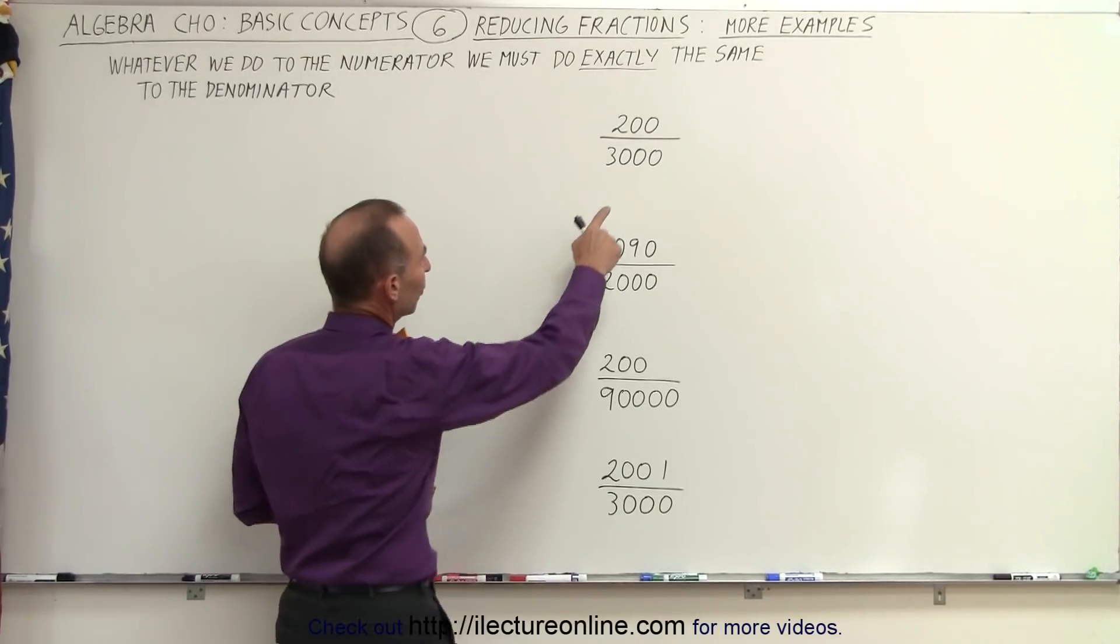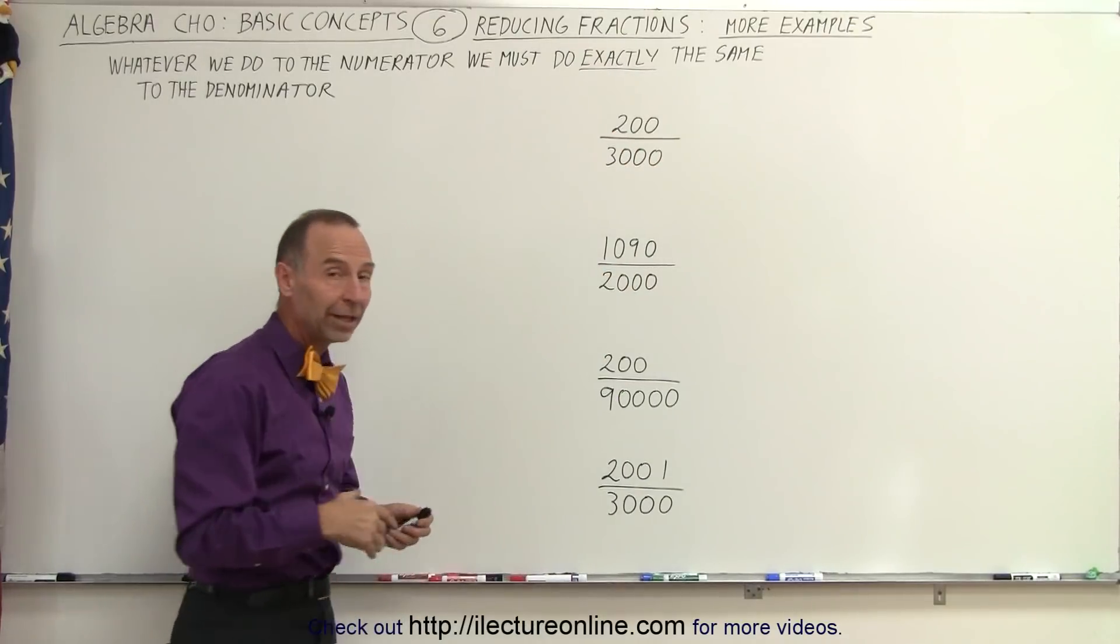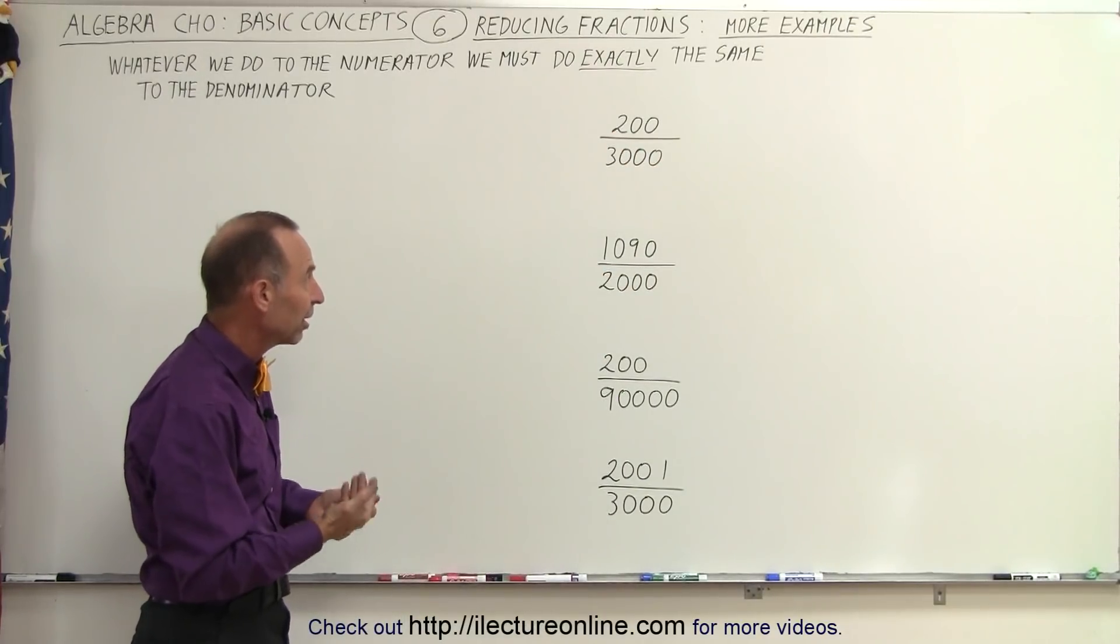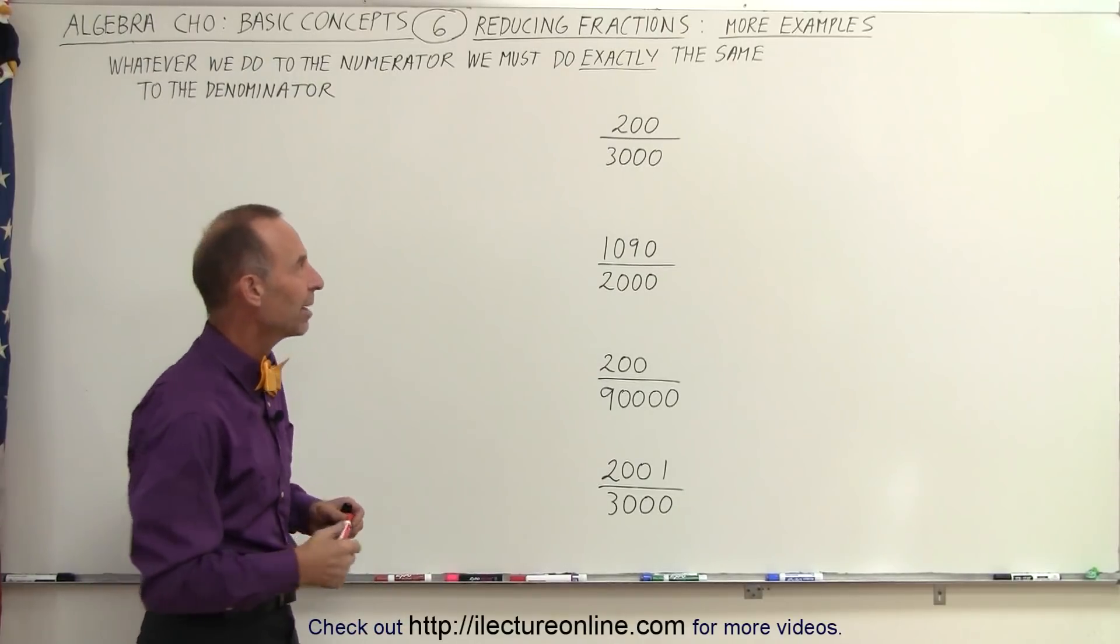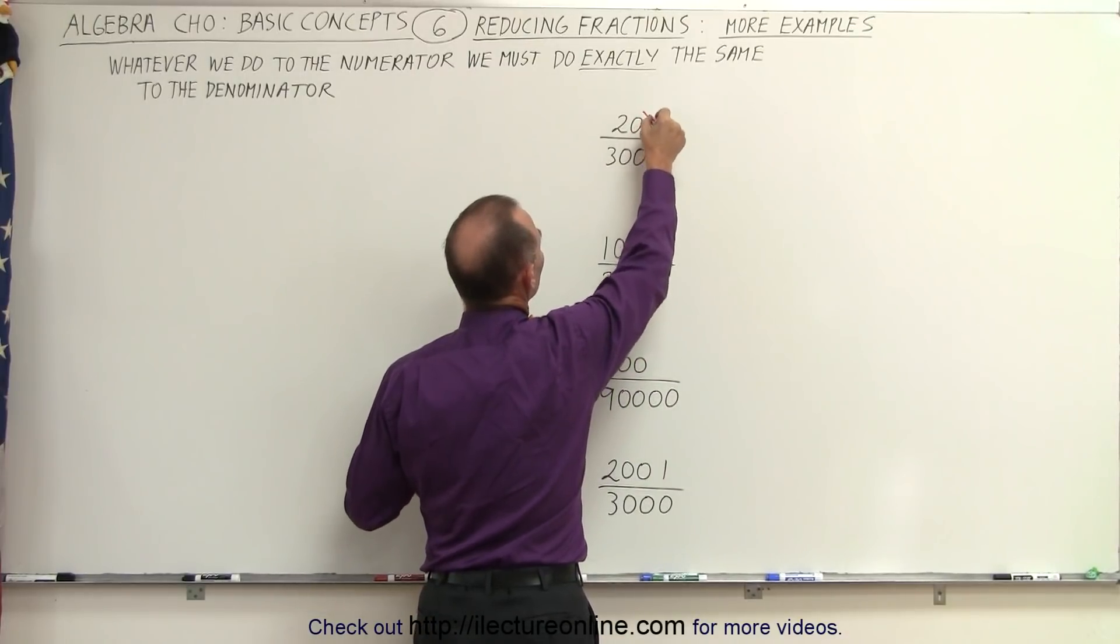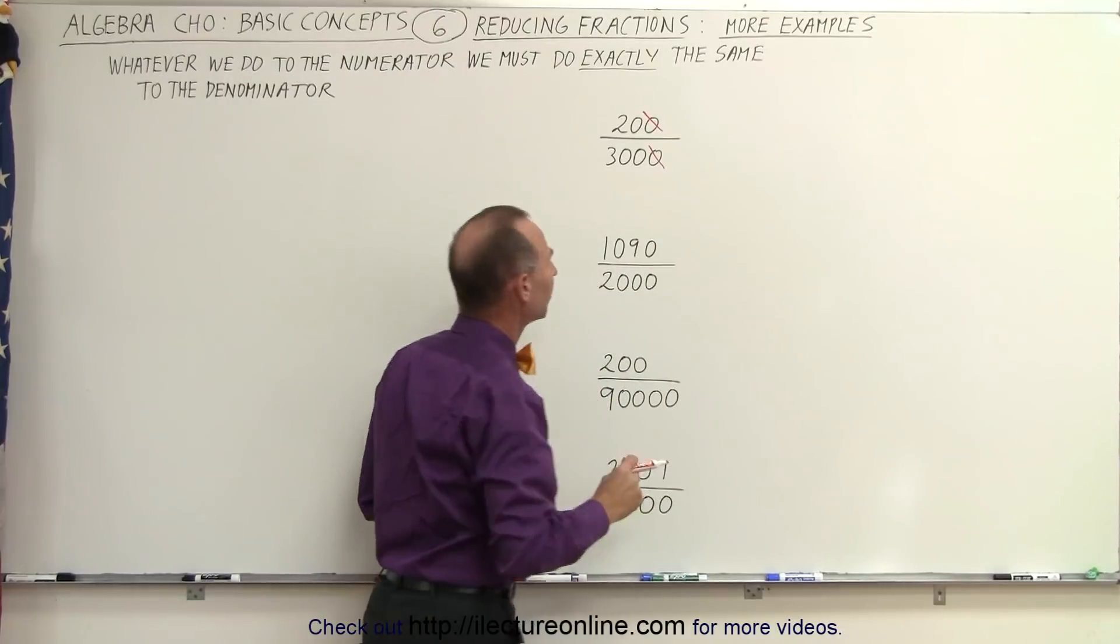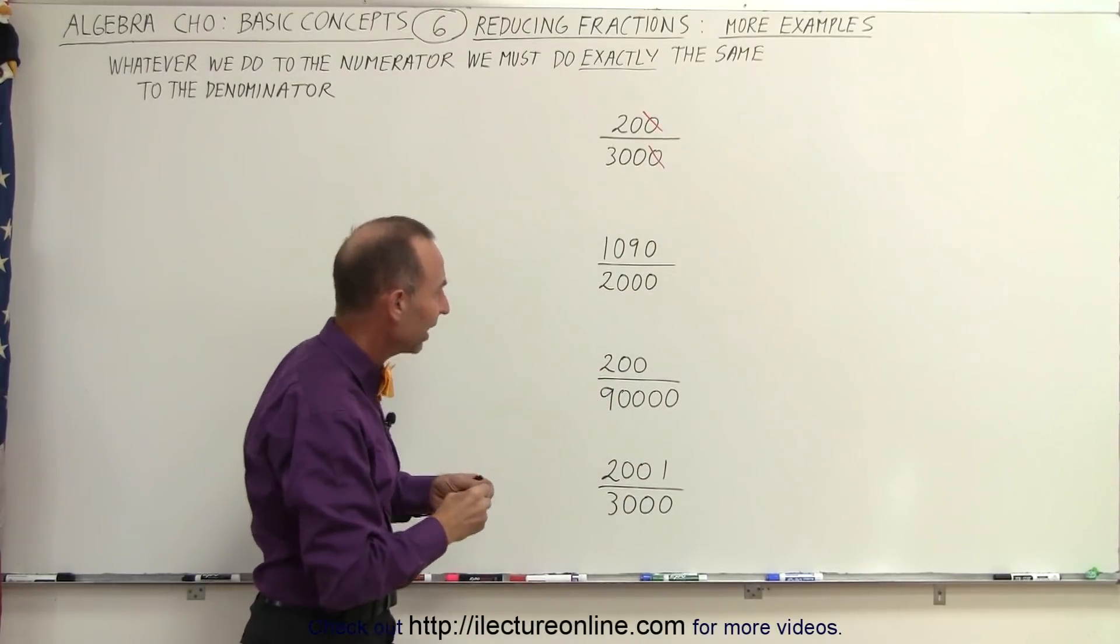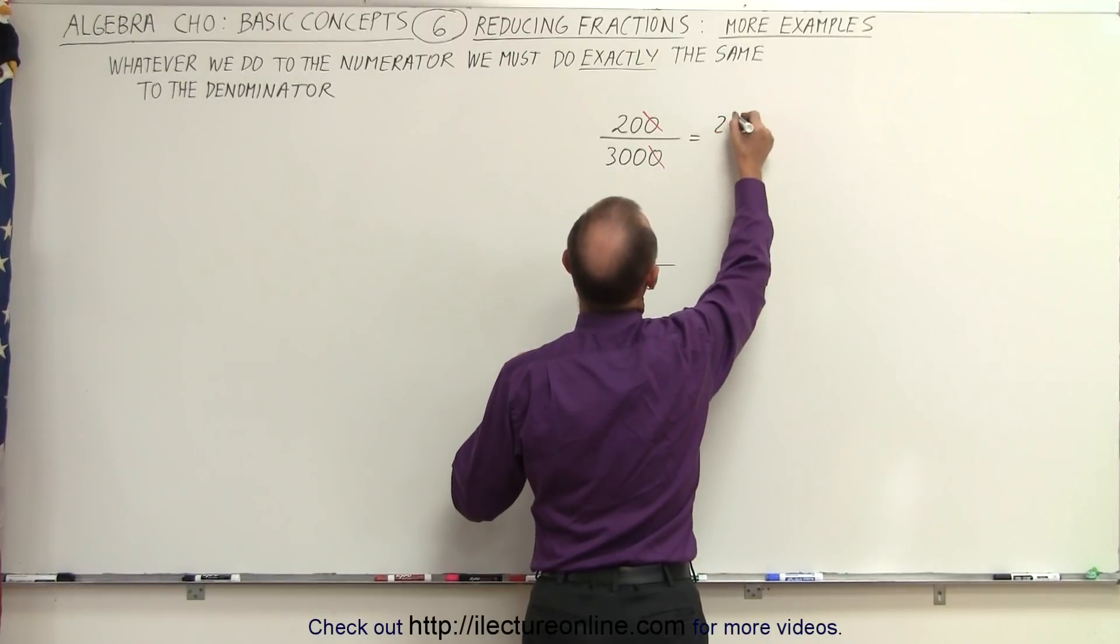So here when we look at the first one, we can see that we have 200 divided by 3000. They both end in a 0, which is an indication that they're both divisible by 10, but we should do it one 0 at a time. So if we divide the numerator by 10, that becomes 20. If we divide the denominator by 10, it becomes 300. And so now what we essentially have at that point is we have the number 20 over the number 300.